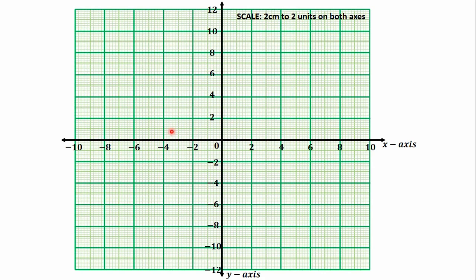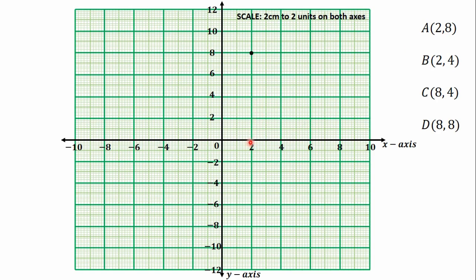We have our graph sheet with the X and Y axes nicely numbered. A has coordinates (2, 8): 2 on the X axis, 8 on the Y axis — they meet at this point. B has coordinates (2, 4): 2 on the X axis, 4 on the Y axis — they meet at this point. C has coordinates (8, 4): 8 on the X axis, 4 on the Y axis — they meet at this point. D has coordinates (8, 8): 8 on the X axis, 8 on the Y axis — they meet at this point.